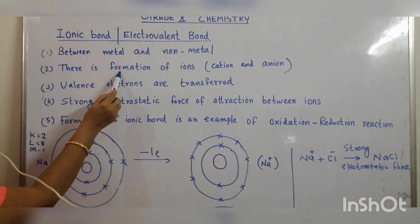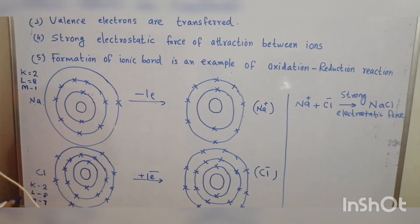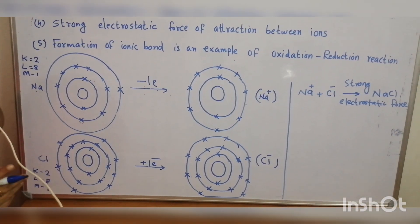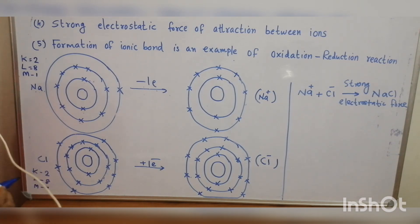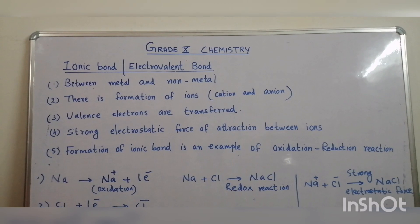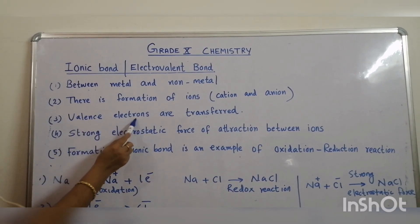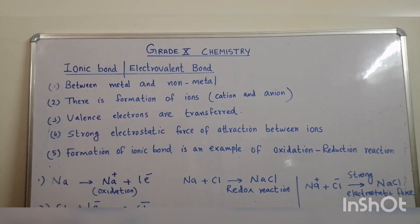In an ionic bond, there is formation of ions — cation and anion. The word 'ionic bond' itself suggests there is formation of ions. The sodium and chloride ions are oppositely charged. There is always mutual attraction between oppositely charged ions — a strong electrostatic force of attraction that binds sodium and chloride ions. In the formation of an ionic bond, valence electrons take part and valence electrons are transferred. An electrovalent bond means valence electrons are transferred.